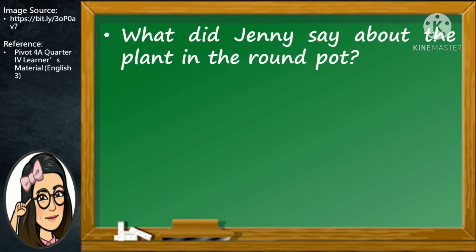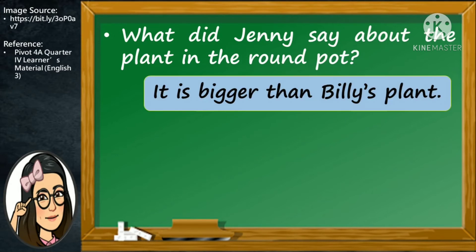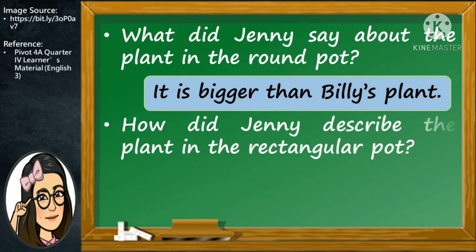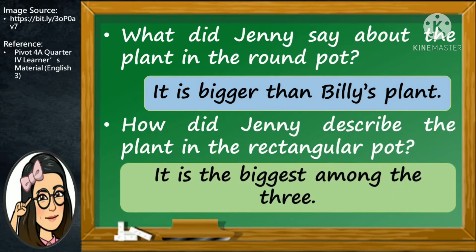Fourth question: What did Jenny say about the plant in the round pot? Excellent! She said it is bigger than Billy's plant. Last question: How did Jenny describe the plant in the rectangular pot? Good job! She described it by saying that it is the biggest among the three.